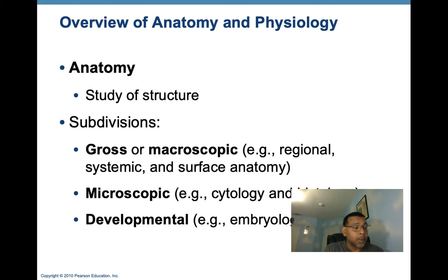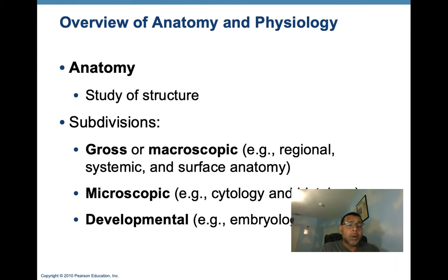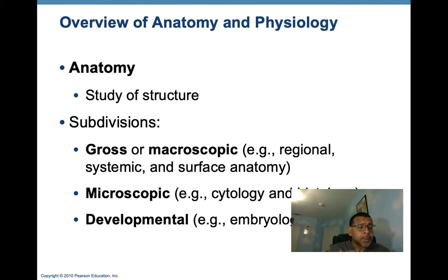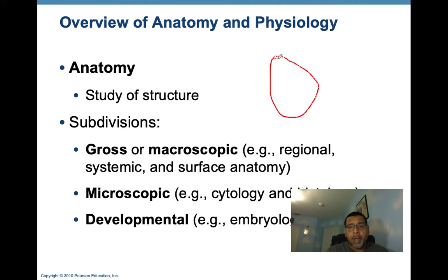The subdivisions of anatomy include, number one, gross anatomy, also known as macroscopic anatomy. Gross anatomy is the study of body structures visible to the naked eye — like studying the heart by looking at it directly, divided into right and left sides. If we talk about the lungs, we're looking at the lungs in their natural shape, with the fissures visible. Same with the kidney, where we can appreciate the ureter and the arteries and veins coming in.